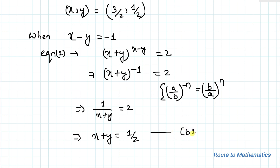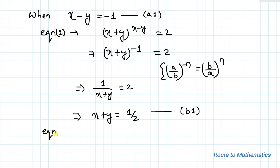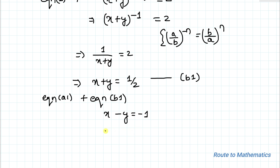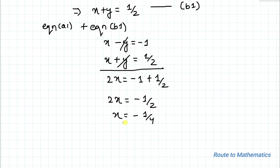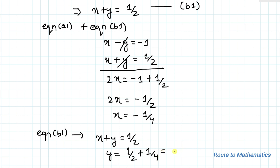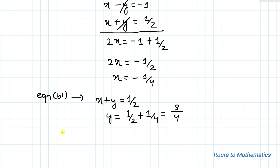Let's call x minus y equals minus 1 equation A1 and x plus y equals 1/2 equation B1. Adding A1 and B1: the y terms cancel, giving 2x equals minus 1 plus 1 by 2, so 2x equals minus 1 by 2, and x equals minus 1 by 4. Substituting into B1: y equals 1 by 2 minus (minus 1 by 4), which gives y equals 3 by 4. So from Case 2, x equals minus 1/4 and y equals 3/4.